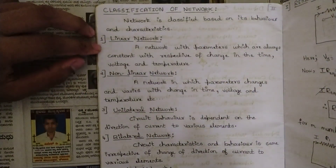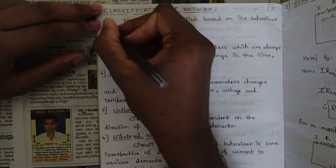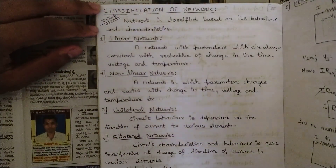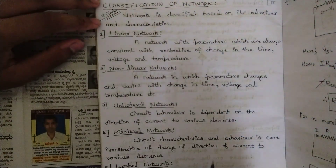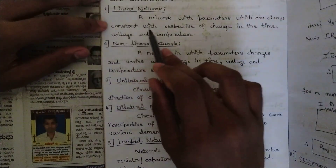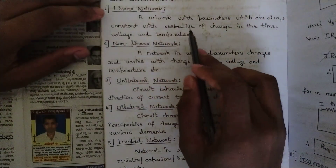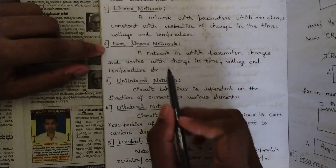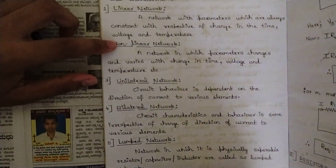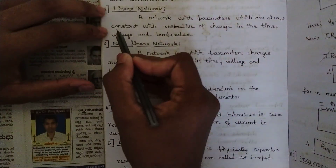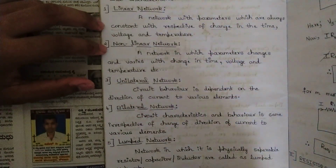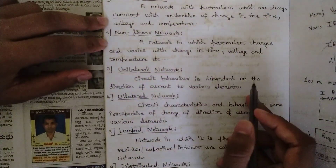Classification of networks is a sure exam question — very important, possibly asked for six marks, and has been asked in previous exams. Networks are classified based on behavior and characteristics. A linear network has parameters that are always constant with respect to changes in time, voltage, and temperature. A nonlinear network has parameters that vary with changes in time, voltage, and temperature.